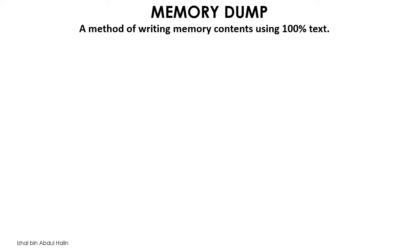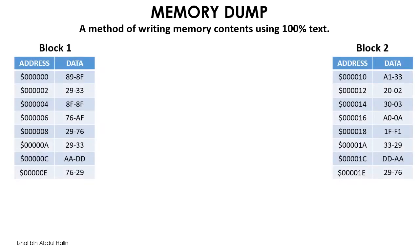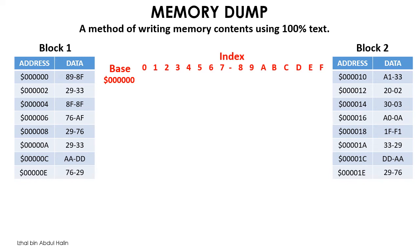We will now take a look at a method of how you can write memory contents using text, called a memory dump. It is a very useful method of showing a lot more memory contents compared to a table format. These two blocks of memory hold 16 bytes of data each: Block 1 holds data from address 0 to F, and Block 2 from address 10 to 1F. To write Block 1 in memory dump format, first write the first even address, 0000000, as the base address, then write the 15-bit index at the top. The data at address 0 is 89, written at index position 0; address 1 contains 8F, written at index 1 under base address 0.